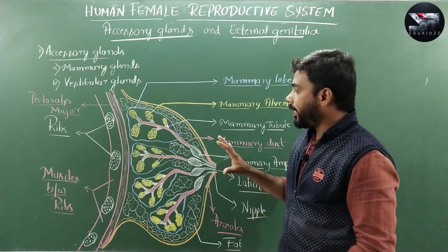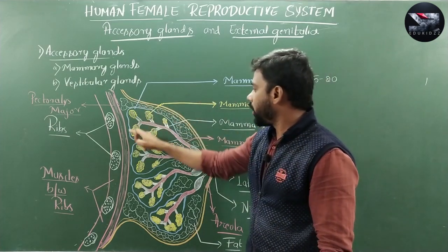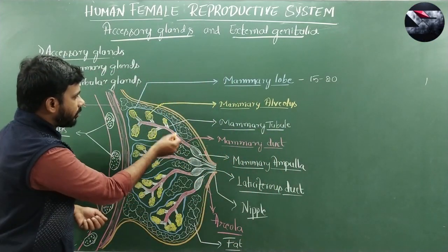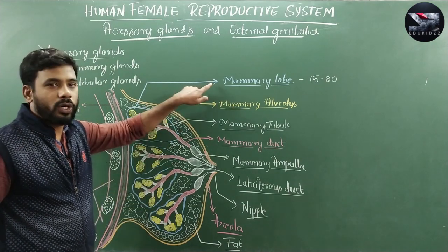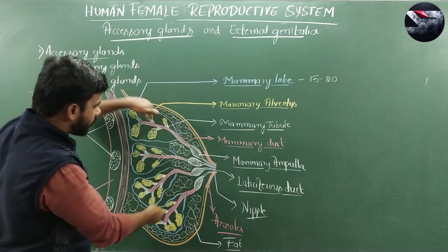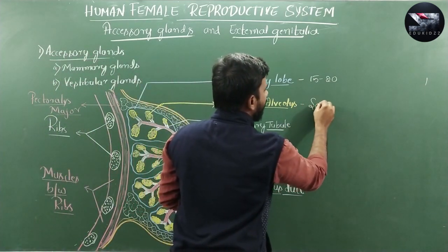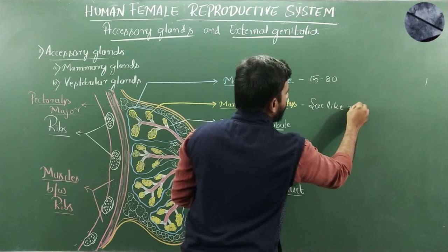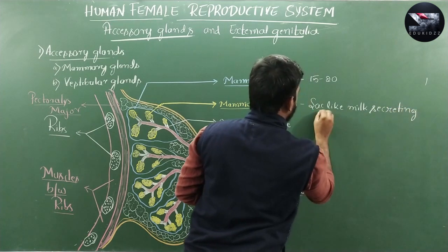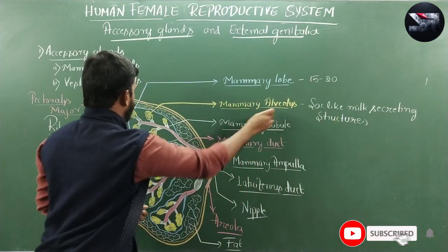Each mammary gland is made up of around 15 to 20 mammary lobes. In the diagram I have shown around four mammary lobes, but generally 15 to 20 are present, radiating from the tip to the end. Each mammary lobe is made up of many sac-like milk-secreting structures called mammary alveoli.